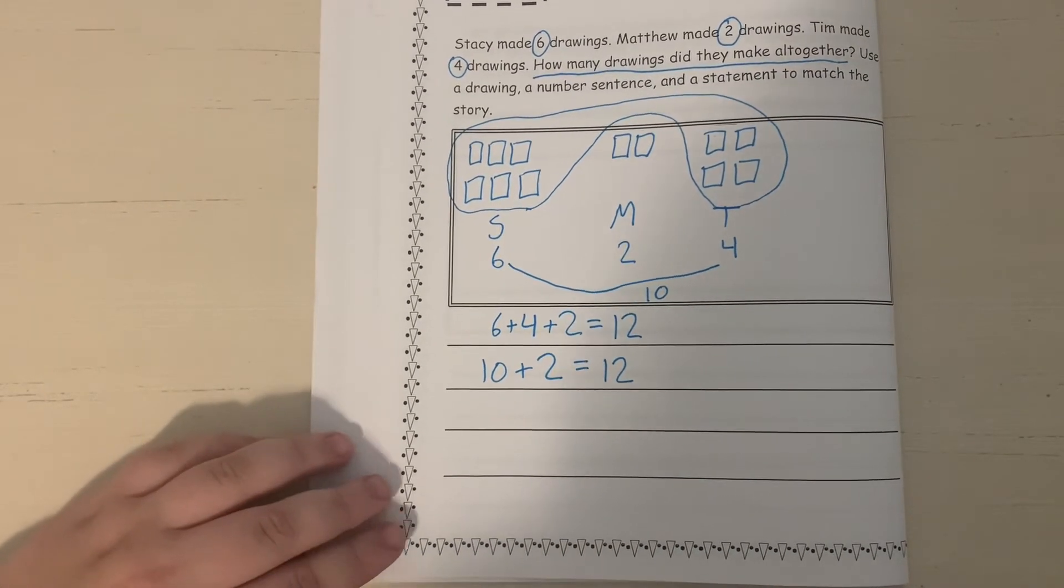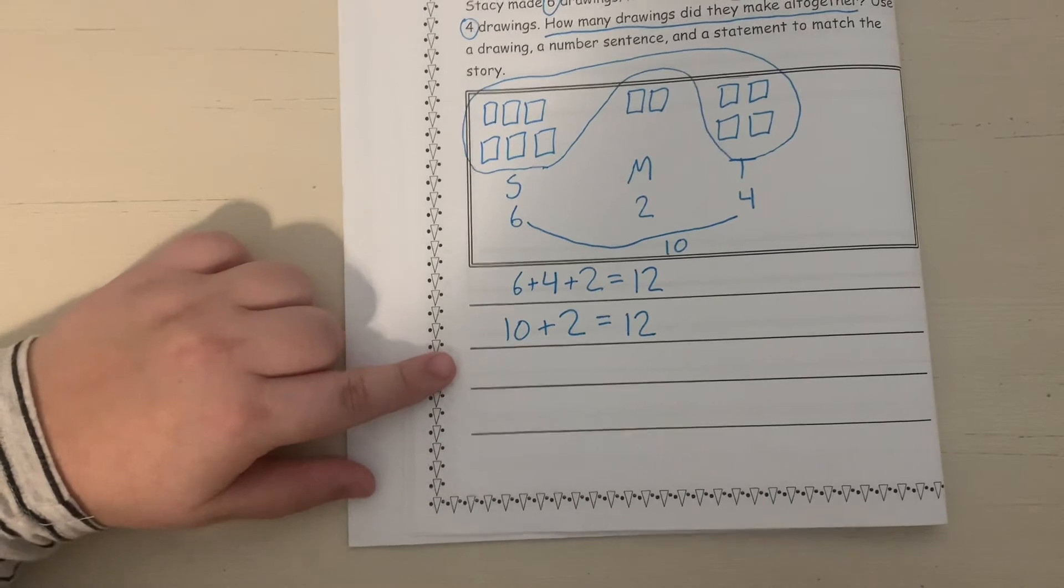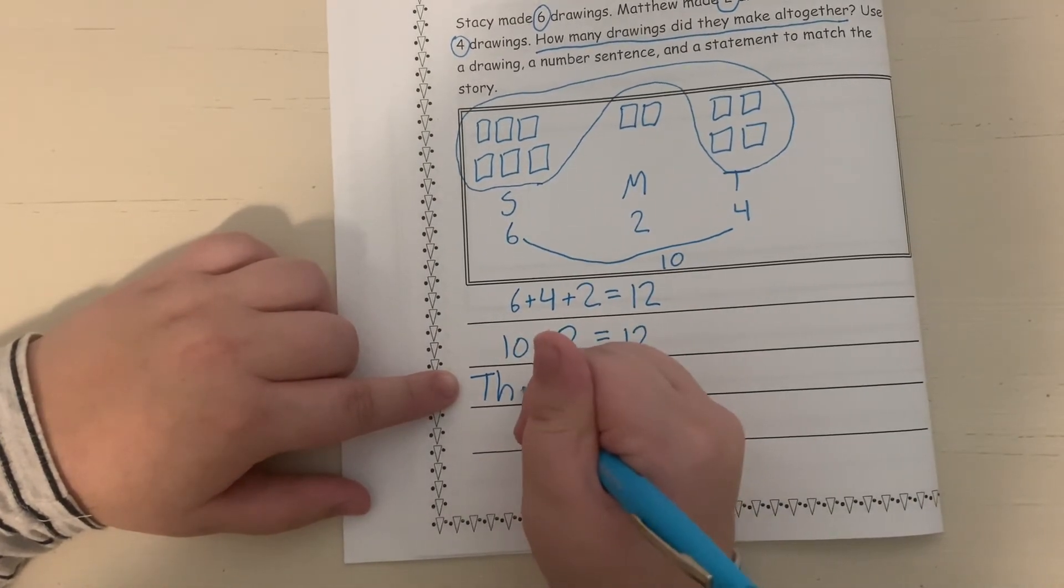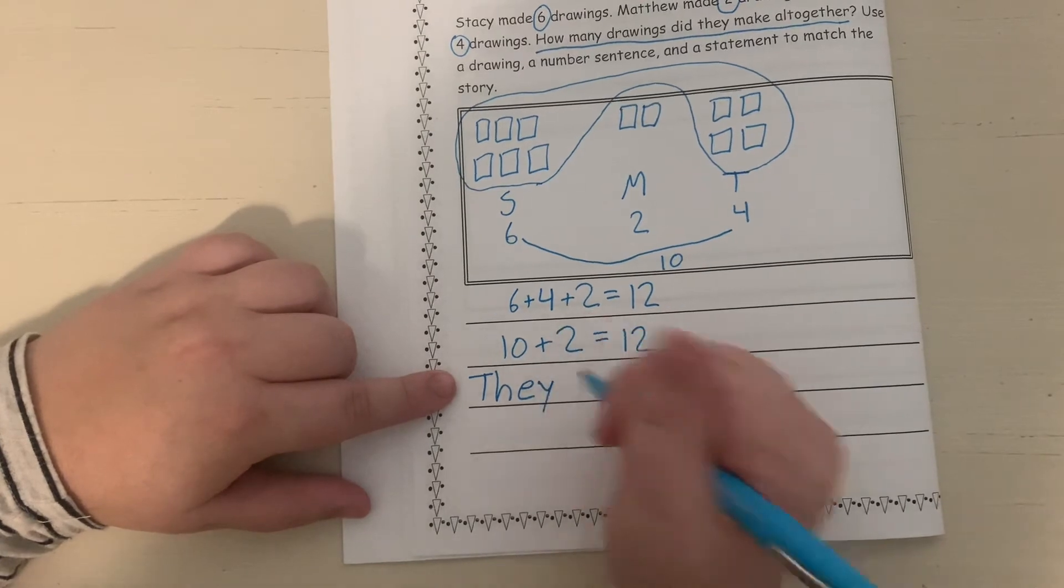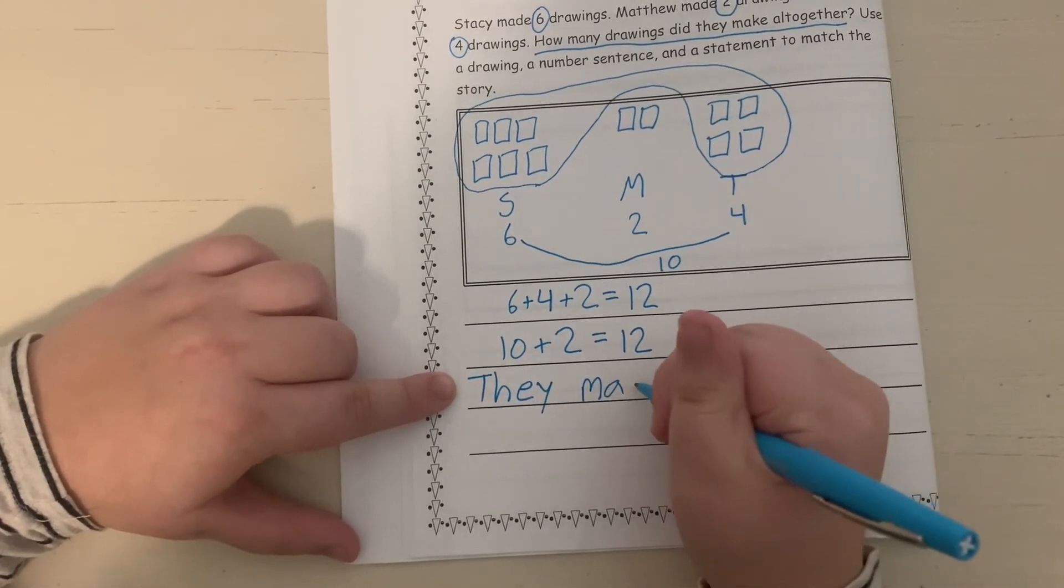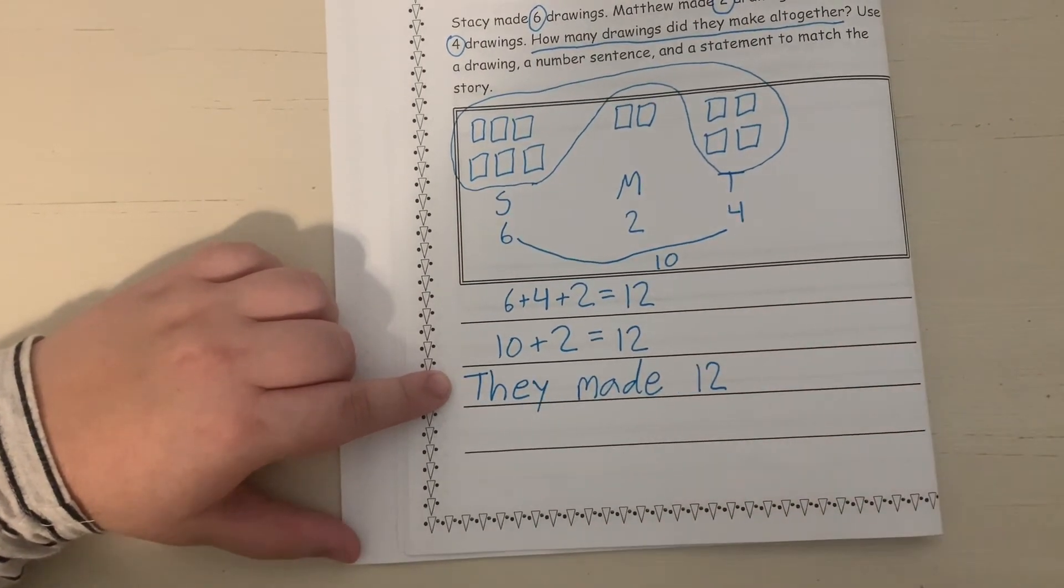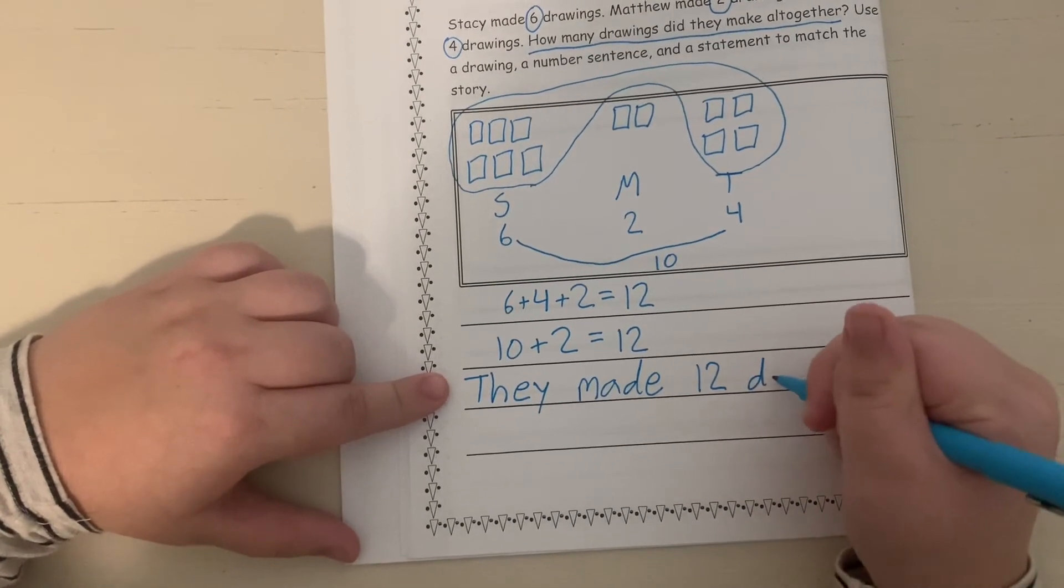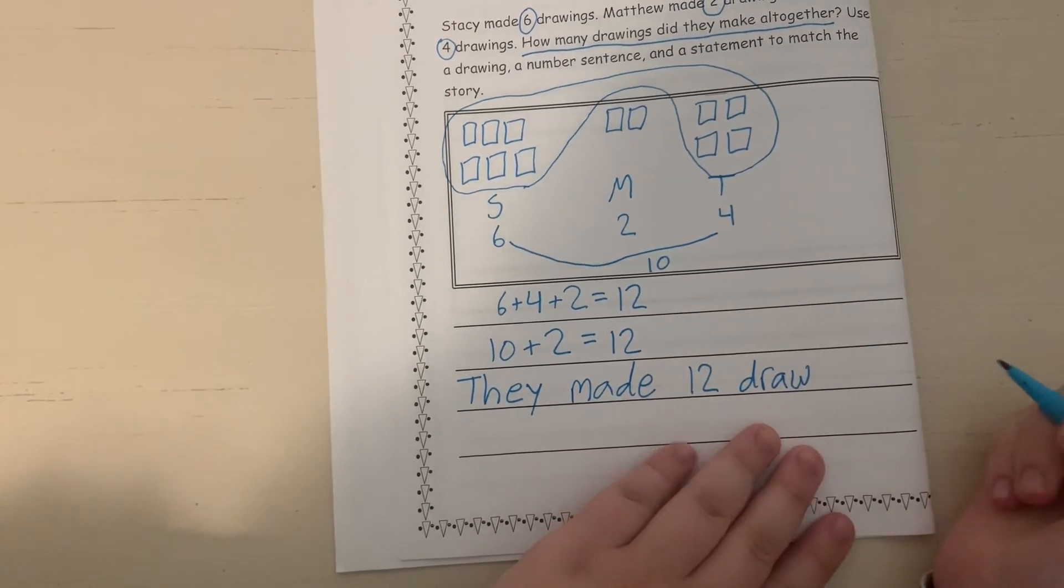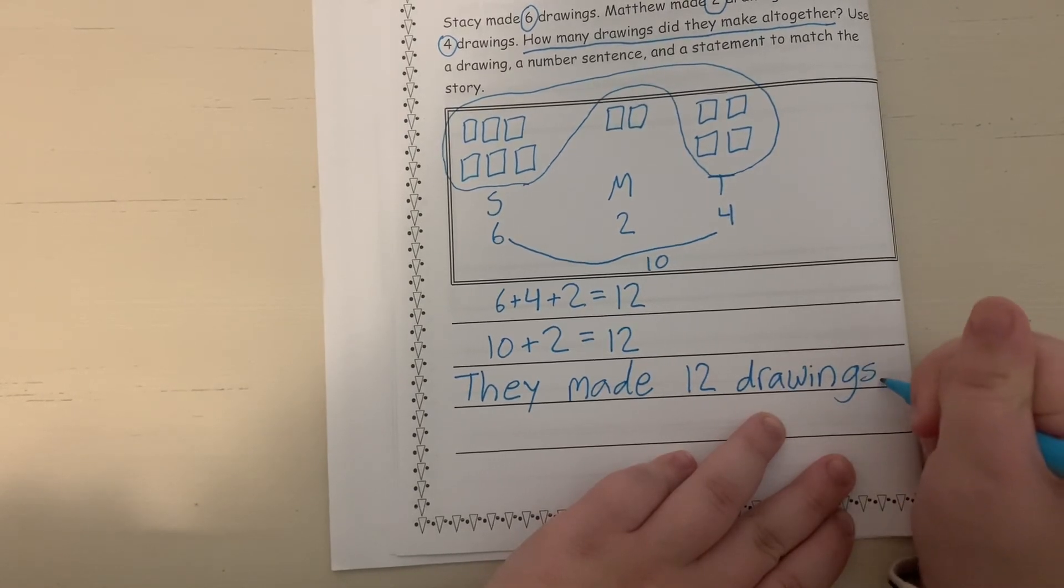So we're going to write that in a sentence. We'll write, 'They had 12 drawings.' We will start writing on this line right here. Make sure you start with a capital T. They starts with T-H-E-Y. They made, M-A-D-E. They made 12, 1 and 2, drawings. D-R-A-W-I-N-G-S. And make sure to put a period at the end of your sentence.